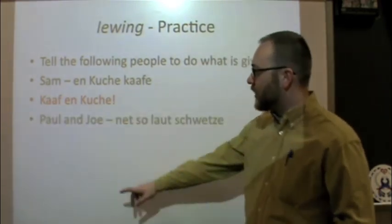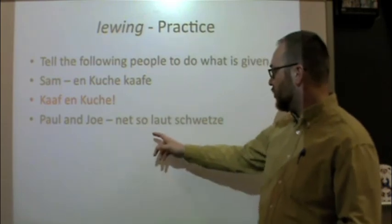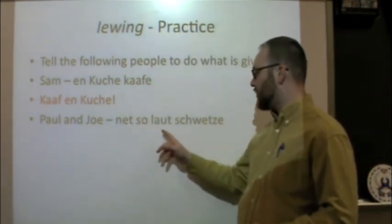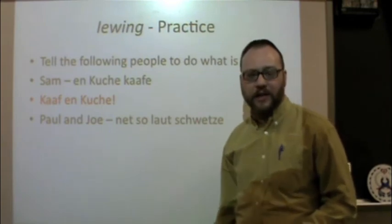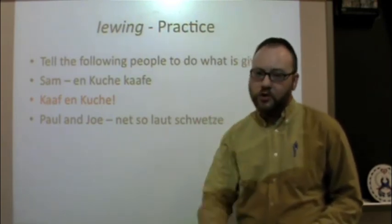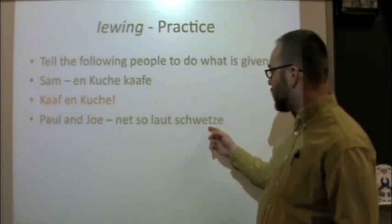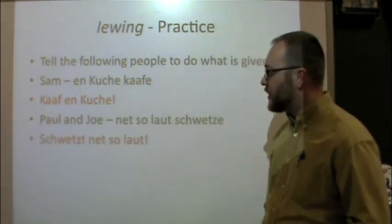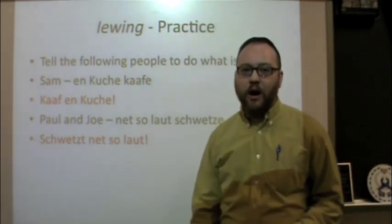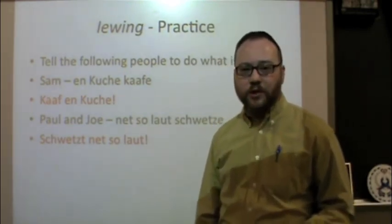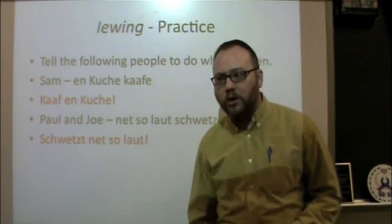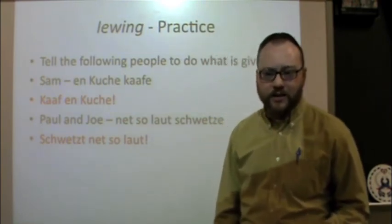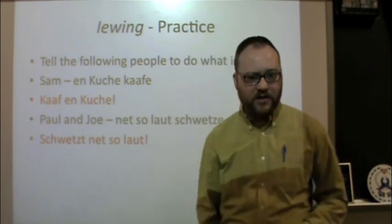This time we're telling Paul and Joe 'net so laut schwetze' — don't talk so loudly. We're talking to two people, so we use the plural form. 'Schwetze' is our verb — drop the E, add a T: 'schwetzt net so laut.' You could say 'Paul, Joe, schwetzt net so laut,' but you don't have to — it's kind of implied in the situation, especially in a conversational exchange.